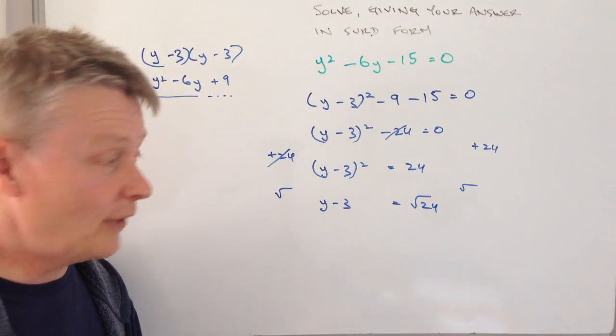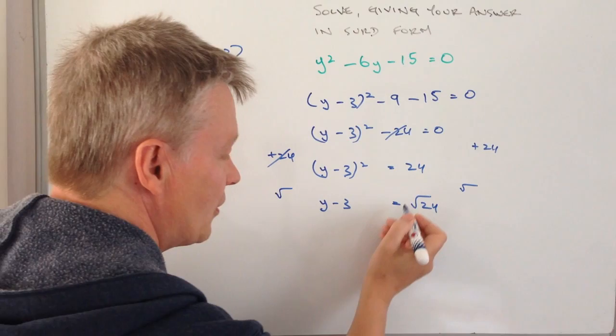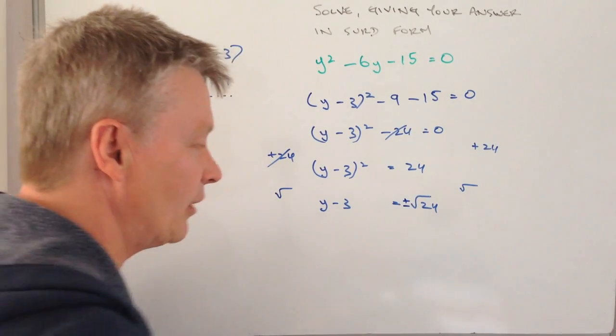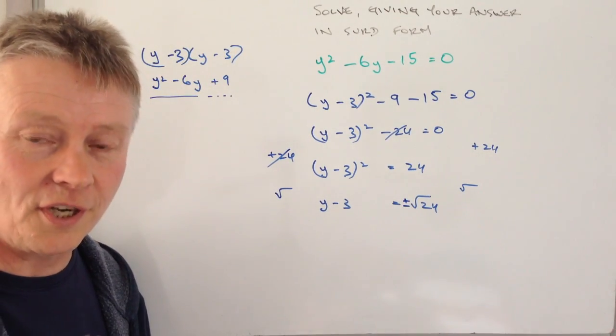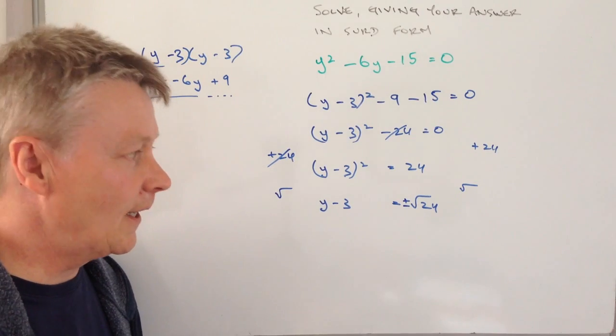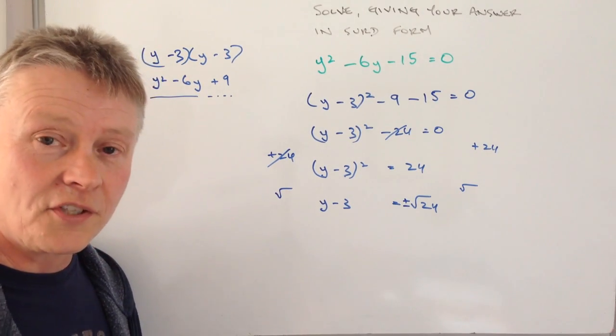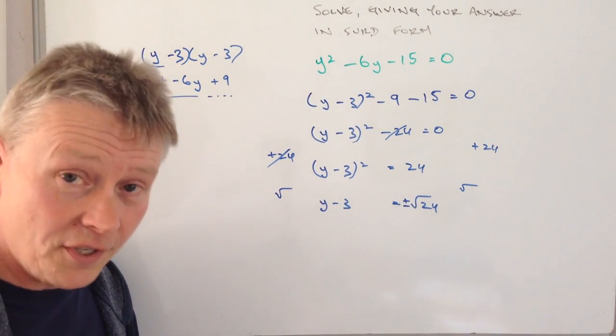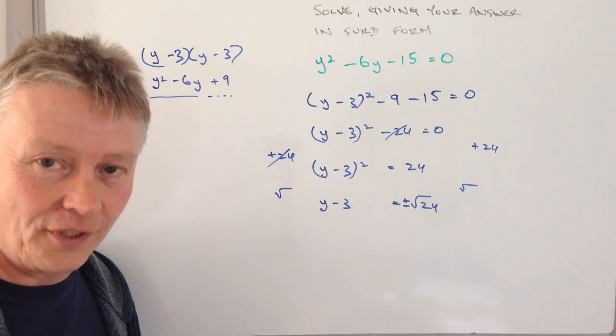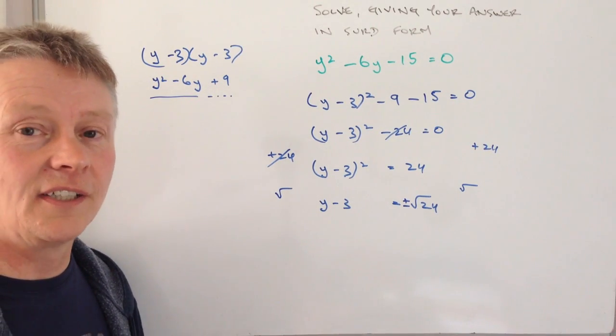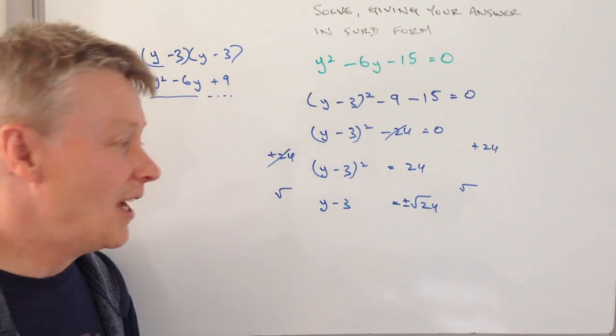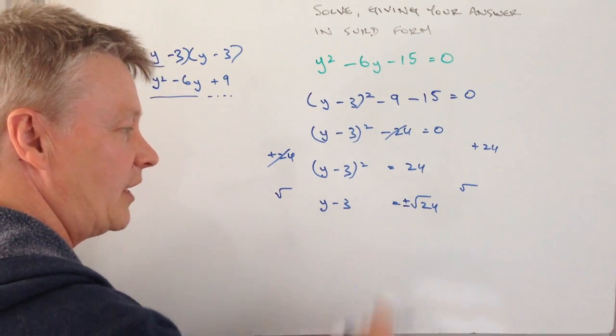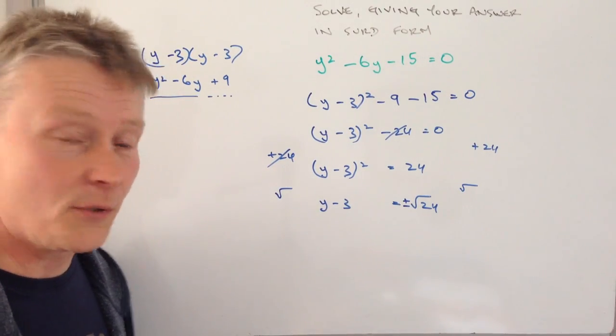Now the thing to be aware of, just to remember, is that the square root of a number is a plus or a minus number. So if you've got for instance something like 81, the square root of 81 is positive 9 or negative 9, because negative 9 times 9 is also equal to 81. So I've got y minus 3 equals plus or minus the root of 24.